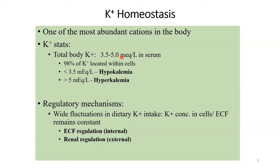A lot of mechanisms go into maintaining this very tight range of ECF potassium, and for good reason. Potassium is crucial not only for nerve action potentials but primarily for cardiac action potentials. The heart and its conduction system depend on a stable ECF potassium, so the main regulator of all this is the kidney.